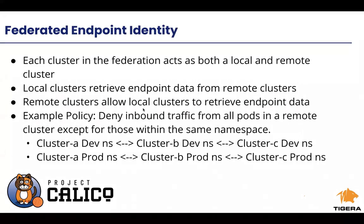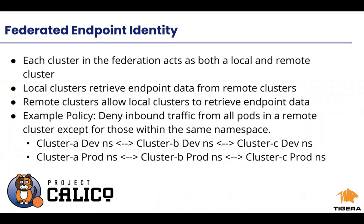With federated endpoint identity, each cluster in the federation acts both as a local and a remote cluster. Local clusters retrieve endpoint data from remote clusters — they subscribe to all other clusters inside the federation and pull that endpoint data locally, allowing them to calculate and enforce policy in the context of the federation. Remote clusters allow local clusters to retrieve the endpoint data, secured via Kubernetes RBAC and Kubernetes tokens.